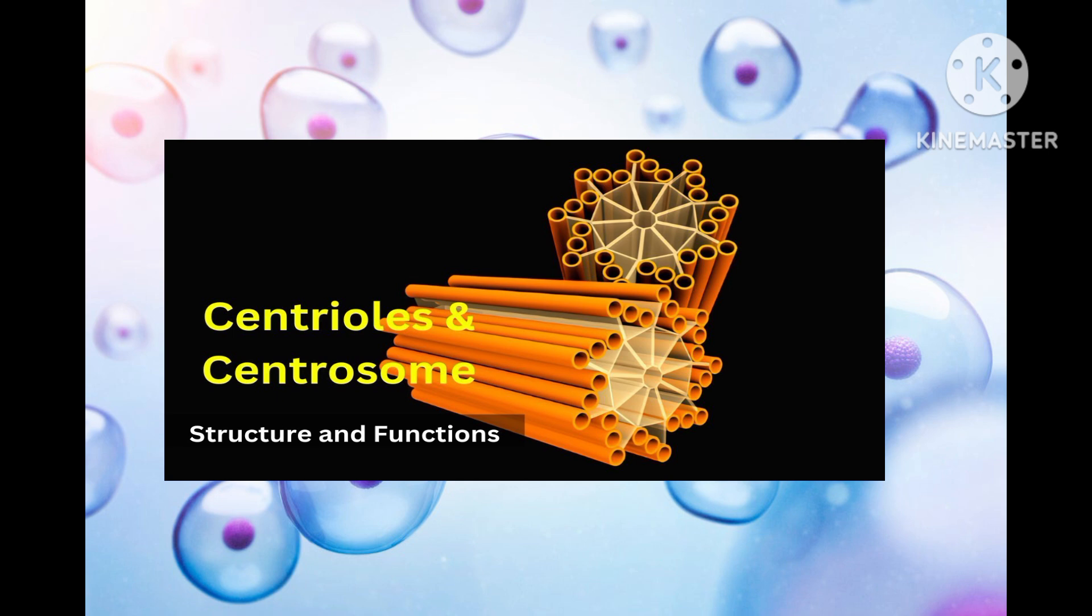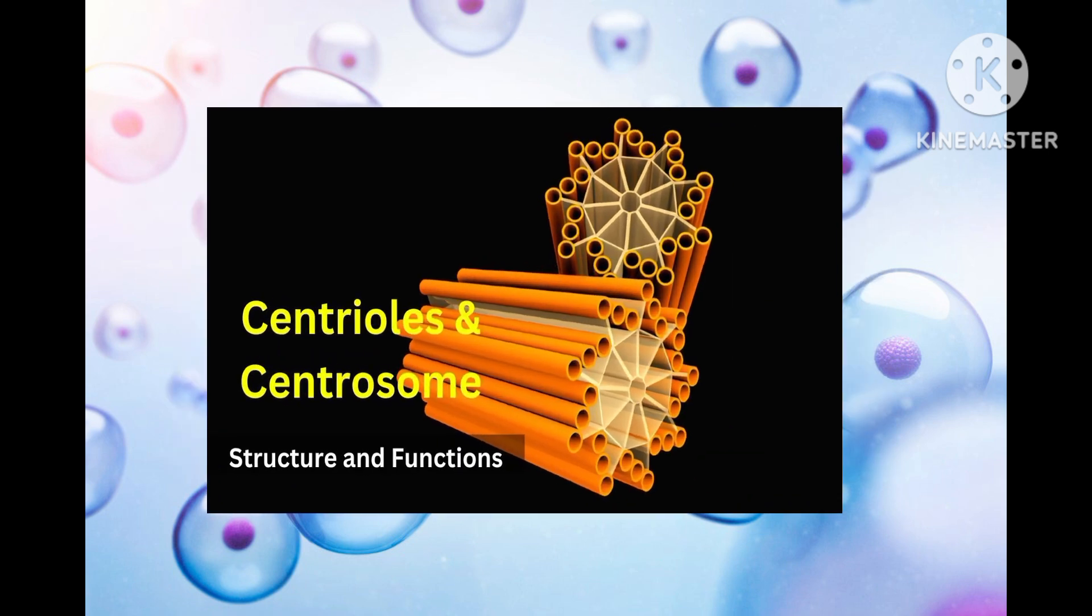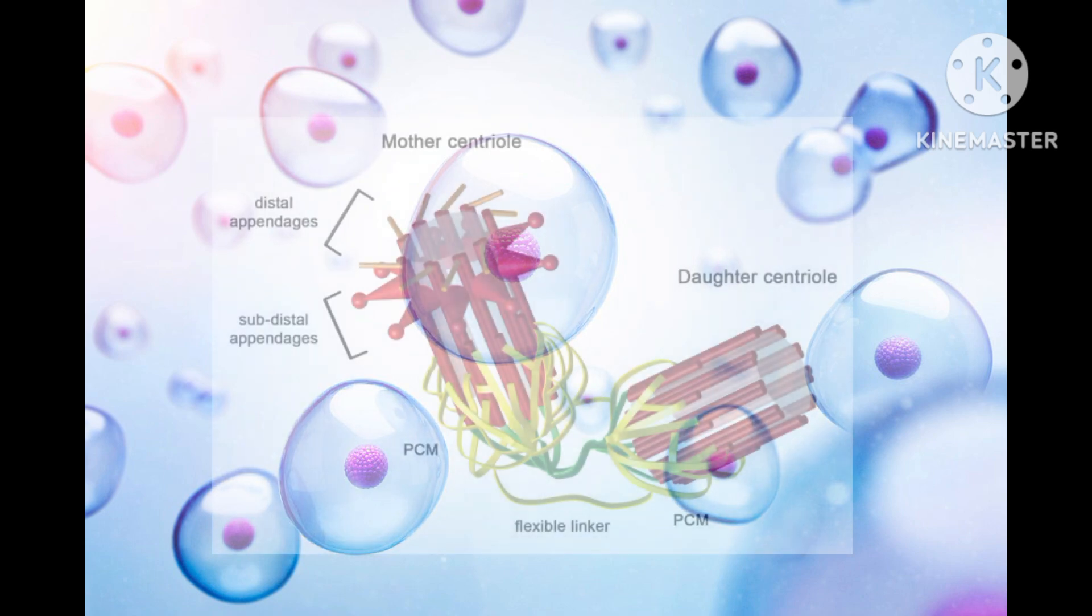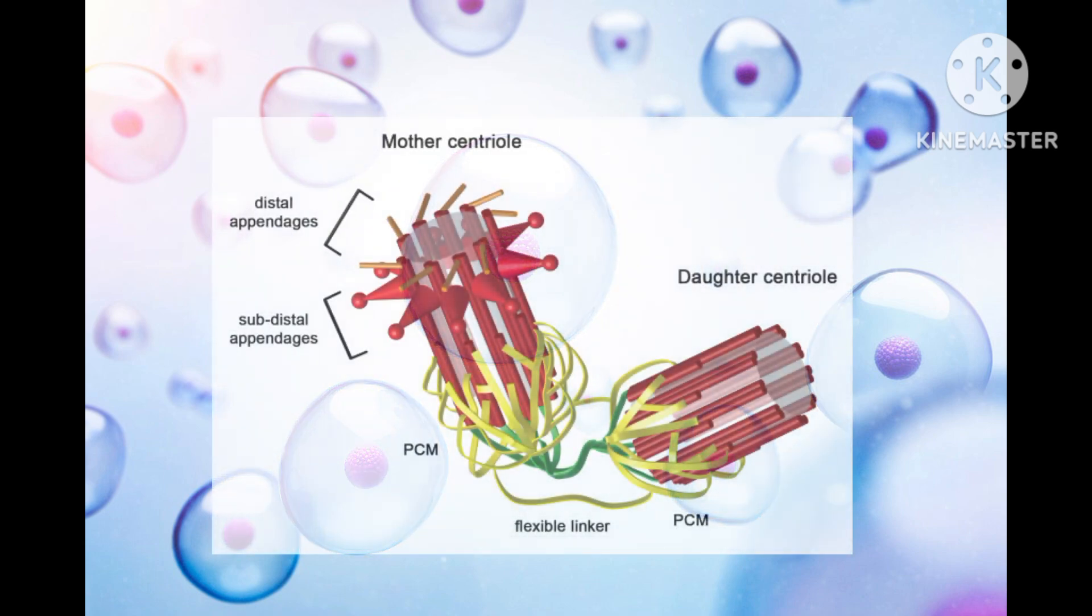The newly formed centrosomes participate in organizing the mitotic spindles. During interphase, the centrosome organizes an astral ray of microtubules that help in intracellular trafficking, cell anchoring, cell polarity, etc. In post-mitotic cells, the centrosome consists of a mature centriole and an immature centriole, known as the mother centriole and daughter centriole respectively.